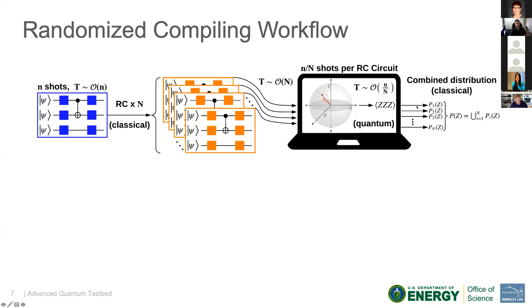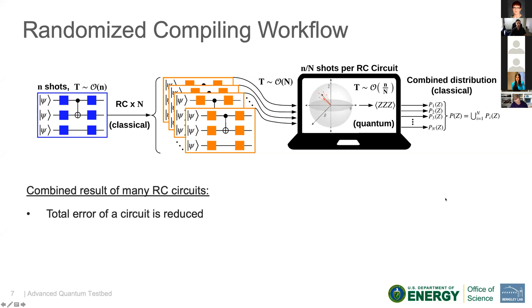Finally, at the end, you take the individual measured probability distributions and you combine them into a single probability distribution. So the combined result of many RC circuits, hopefully, is that the total error of a circuit is reduced.